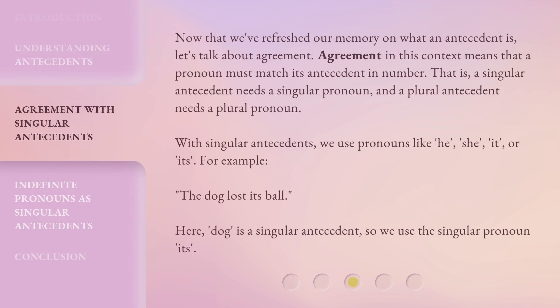Now that we've refreshed our memory on what an antecedent is, let's talk about agreement. Agreement in this context means that a pronoun must match its antecedent in number. That is, a singular antecedent needs a singular pronoun.